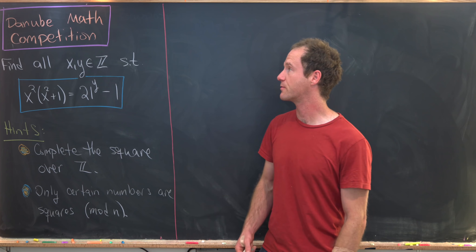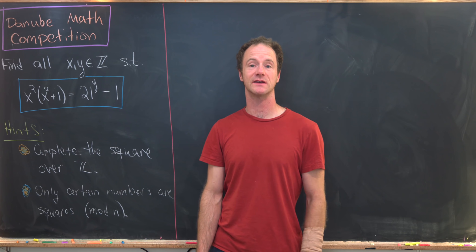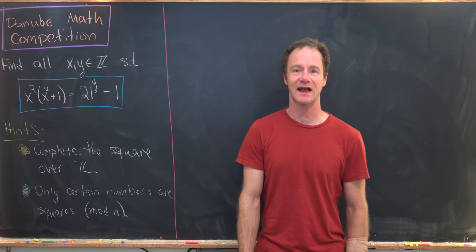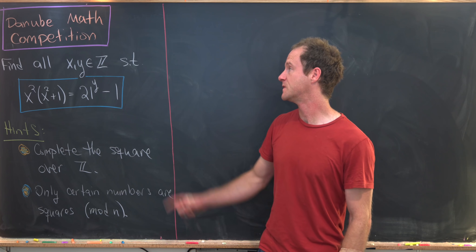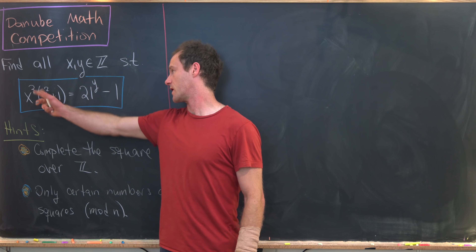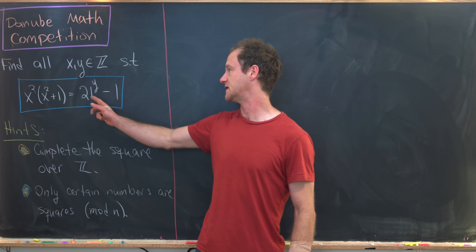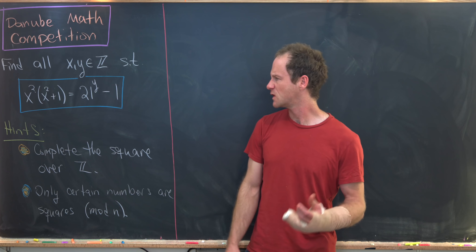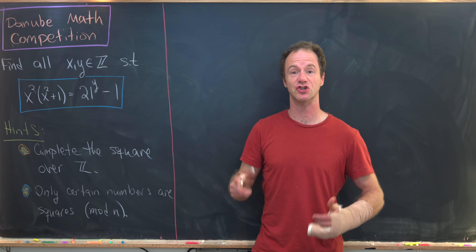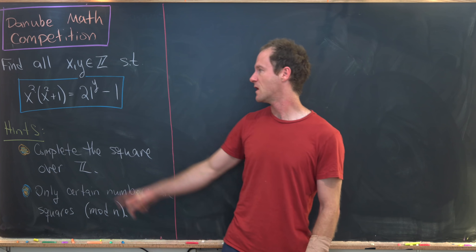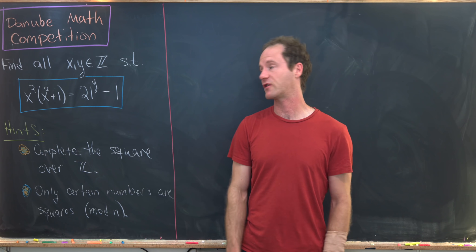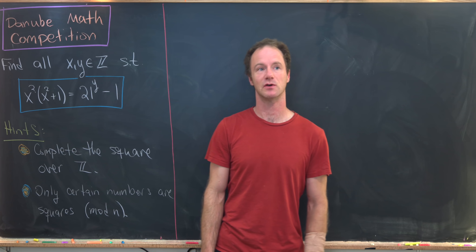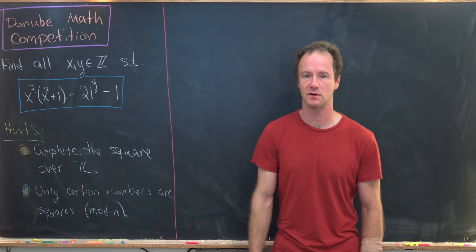Here I've got a pretty nice number theory problem from the Danube contest in mathematics. Our goal is to find all integers x and y such that x squared times the quantity x squared plus 1 is equal to 21 to the y minus 1. First, notice that 21 equals 3 times 7, so we'll most definitely use either that it is a multiple of 3 or a multiple of 7.